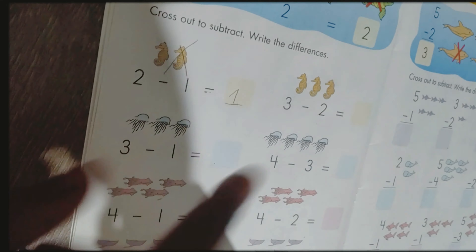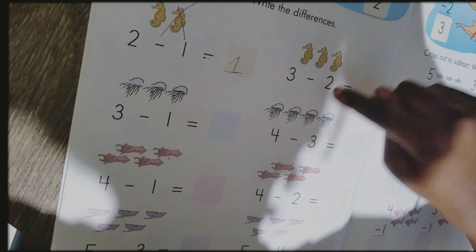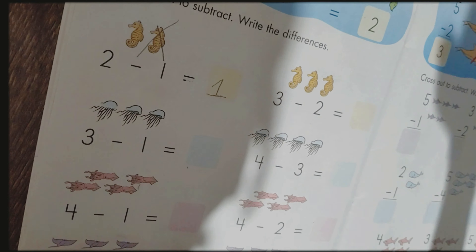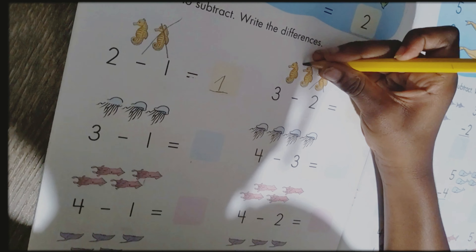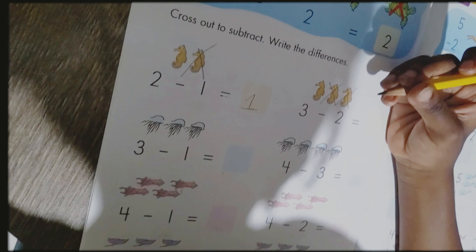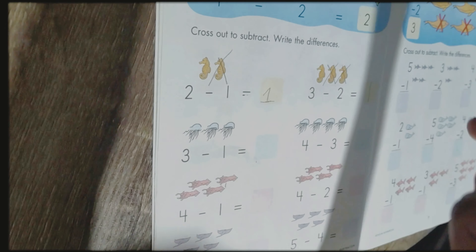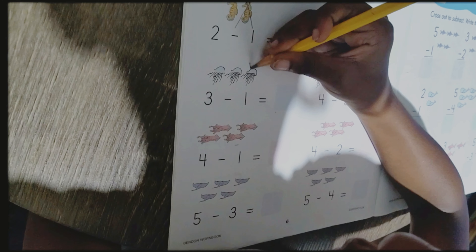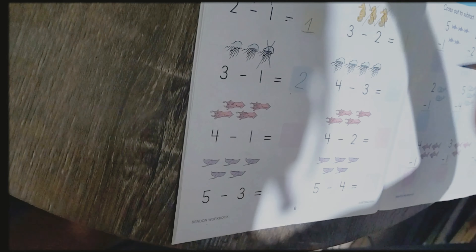Number one is the answer. Okay, now over here. How many am I crossing out? Two. Okay, then cross it out. We're going to cross out two. One and two. How many do we have left? One. Good job. Okay, over here. How many am I crossing out? One. How many do I have left? Two. Very good.